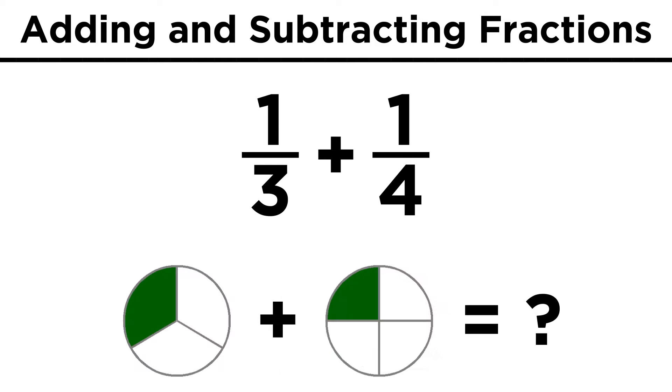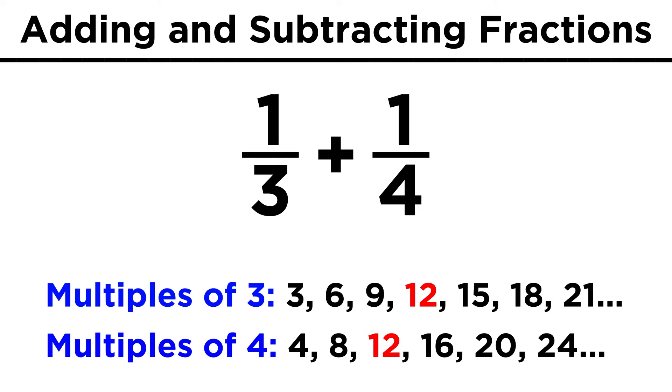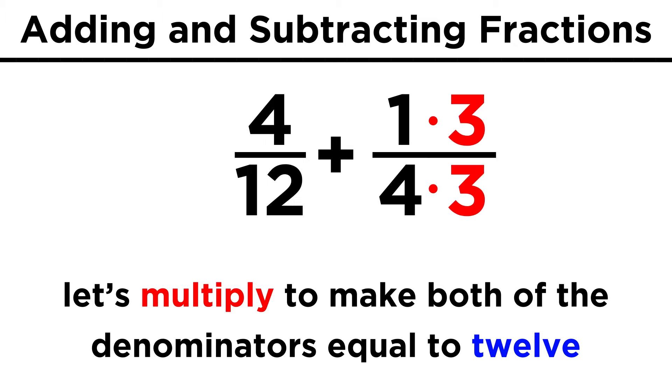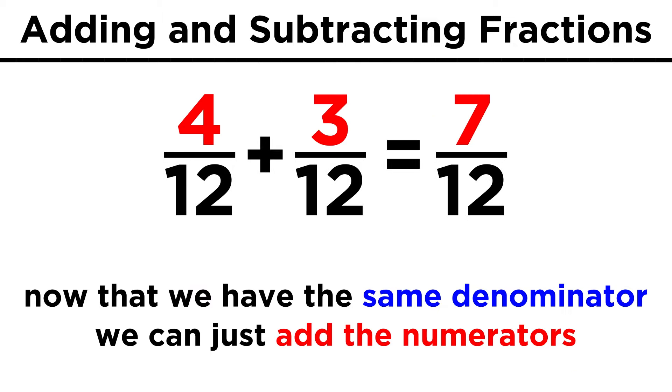Take one third and one fourth. It's not immediately obvious what this sum would be. But if we recognize that the least common multiple of three and four is twelve, then we can make things easier for ourselves. Multiplying by four over four, one third will become four twelfths, and multiplying by three over three, one fourth will become three twelfths. Now we just add them together, and four plus three is seven, so we get seven twelfths.